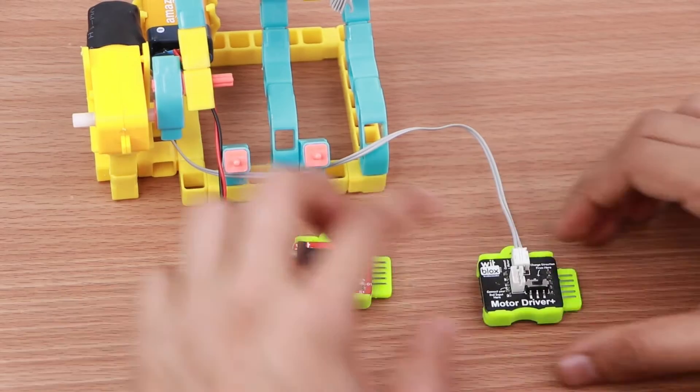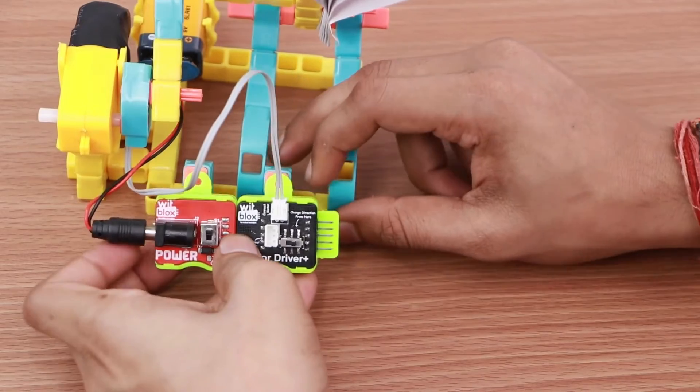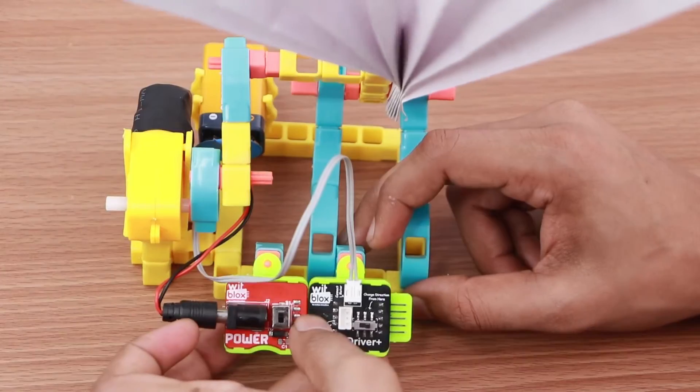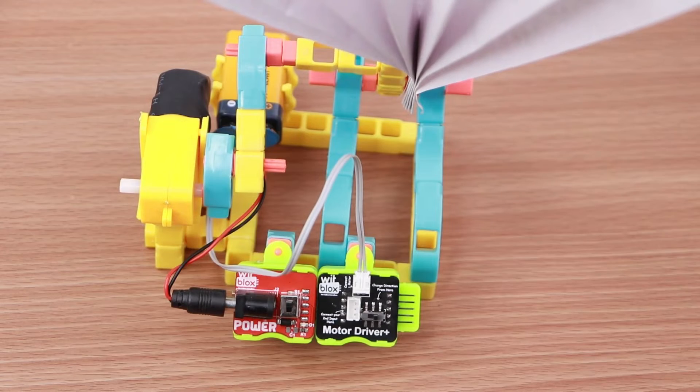Take the power blocks and join it to the motor driver blocks. Once connected, attach the blocks onto the blocks holders. Our cooling fan is now ready. Are you ready?